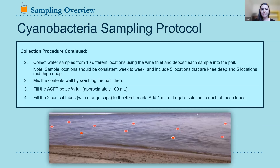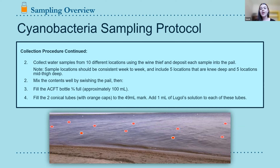For cyanobacteria sampling, you have five separate sites — the same principle as enterococcus: sites must be representative of the entire swimming area and evenly spaced. At each of the five sites, you collect at two separate depths: one at about knee depth and one at about mid-thigh depth, totaling 10 separate wine thief samples into the pail.